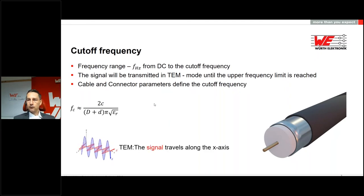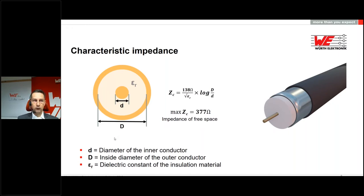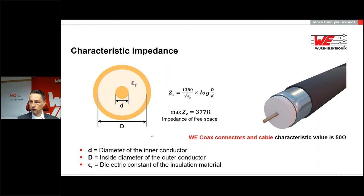The next parameter is the characteristic impedance. For coaxial systems, it is 138 ohm divided by the square root of epsilon R, multiplied by the logarithm of the inner diameter of the outer conductor divided by the outer diameter of the inner conductor. So we have influence of both material and geometry. This is important because it also influences signal transmission on the PCB — you have to respect the geometry in your design. For Würth Elektronik, all coaxial connectors in our current range have a characteristic impedance of 50 ohm.